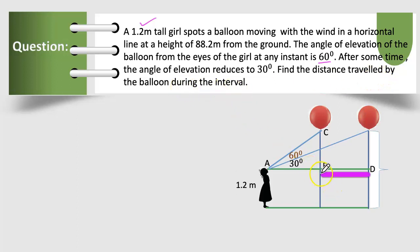It means we have to find the distance from B to D. Here height is given 88.2m from the ground. So the height of the girl is 1.2m.